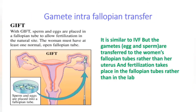GIFT stands for Gamete Intra-Fallopian Transfer. It is similar to IVF, but the gametes — egg and sperm — are transferred to the woman's fallopian tubes rather than her uterus, and fertilization takes place in the fallopian tubes rather than in the lab.